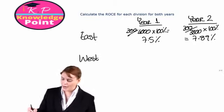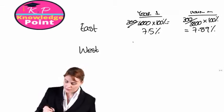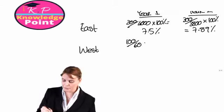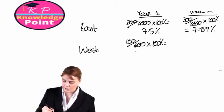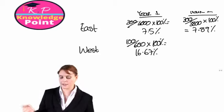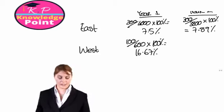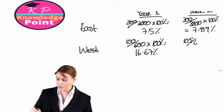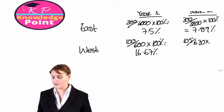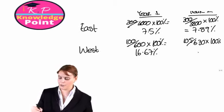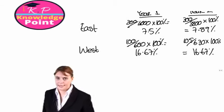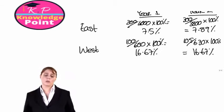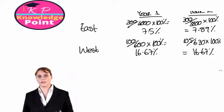We look at division West. For year one, they have a profit figure of 100 and capital employed of 600, which gives us 16.67%. Doing the same thing for year two, their profit is 105 divided by capital employed of 630 and multiply by 100%, and we get the same thing, 16.67%. So West division has been consistent across the two years.